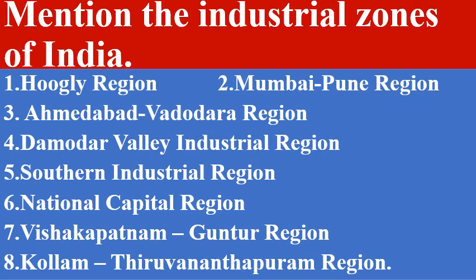Mention the industrial zones of India. There are 8 industrial zones — learn them well, it is a 3-mark question. They are: Hugli region, Mumbai-Pune region, Ahmedabad-Vadodara region, Damodar Valley industrial region, Southern industrial region, National Capital region, Vishakhpatnam-Guntur region, and Kollam-Thiruvananthapuram region.